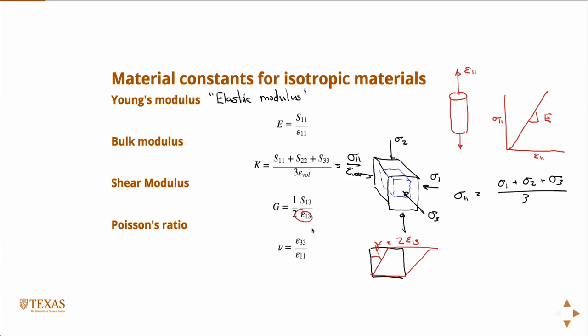Of course, there's other shear components. There's 1,2. So 1,2, 1,2 would also be equal to G, and 2,3, 2,3 would also be equal to G. But you can have anisotropic materials that, if you shear them in different directions, they'd have a different resistance, and in that case, you'd have multiple shear moduli.